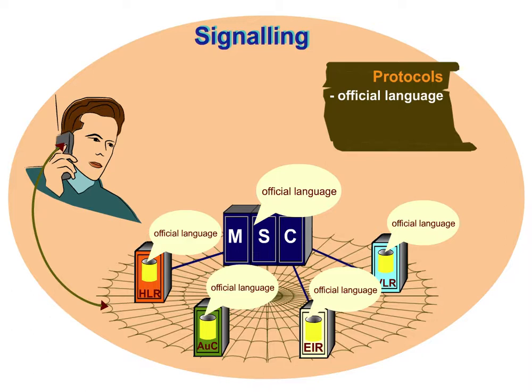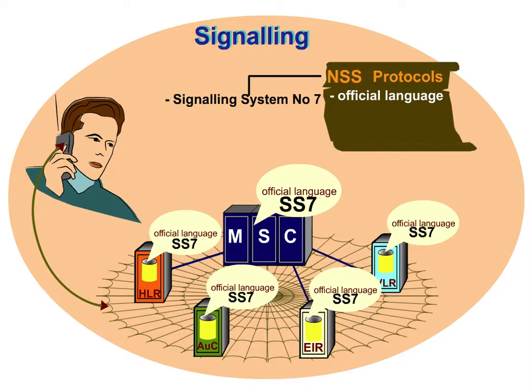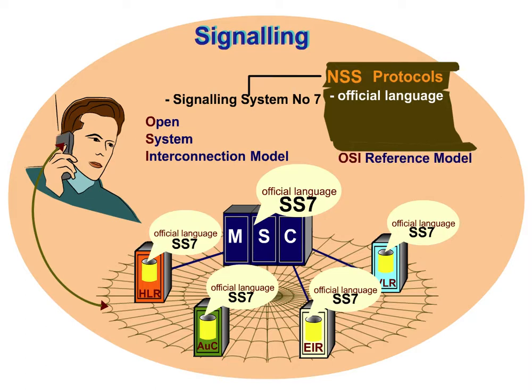The protocol used in the network subsystem, NSS, is called Signaling System Number 7, or SS7. SS7 is based on the Open System Interconnection model, also called the OSI reference model.